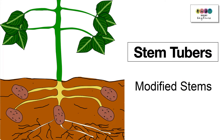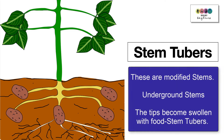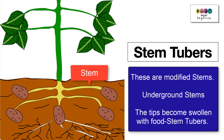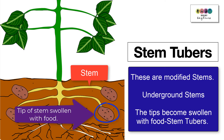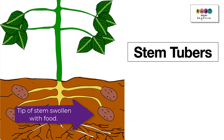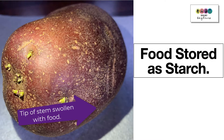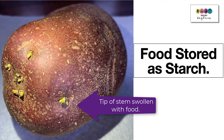Some plants can modify their stems to store food. One example is the potato plant — it forms a stem tuber. These are modified underground stems, the tips of which become swollen with food. So the potato is actually the swollen tip of an underground stem; it's a tuber. It's there because it's storing food — it's swollen with all these food reserves, all this starch.